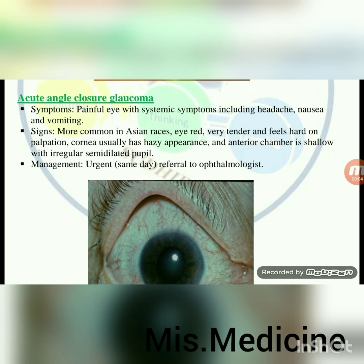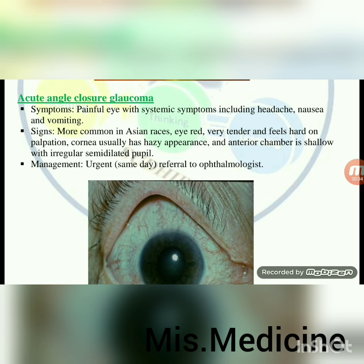Acute angle-closure glaucoma — symptoms: painful eye with systemic symptoms including headache, nausea and vomiting. Signs: more common in Asian races; eye very tender and feels hard on palpation; cornea usually has hazy appearance; anterior chamber is shallow with irregular, semi-dilated pupil. Management: urgent same-day referral to ophthalmologist.